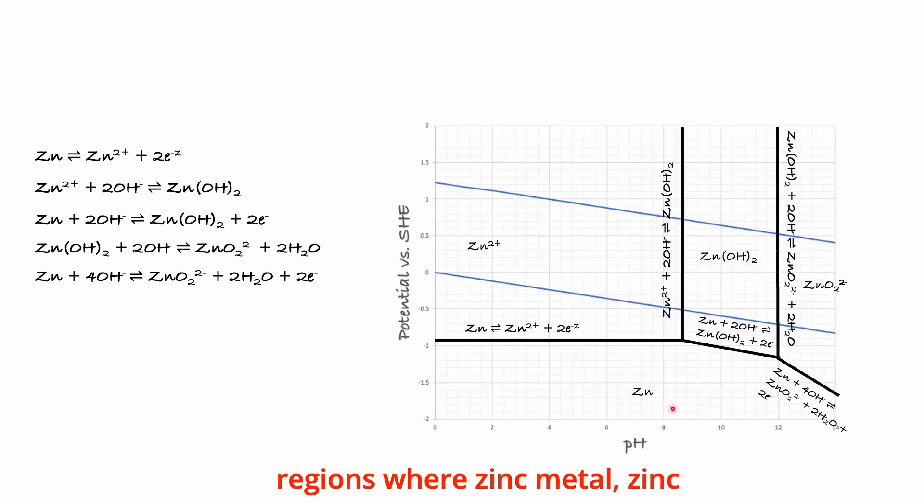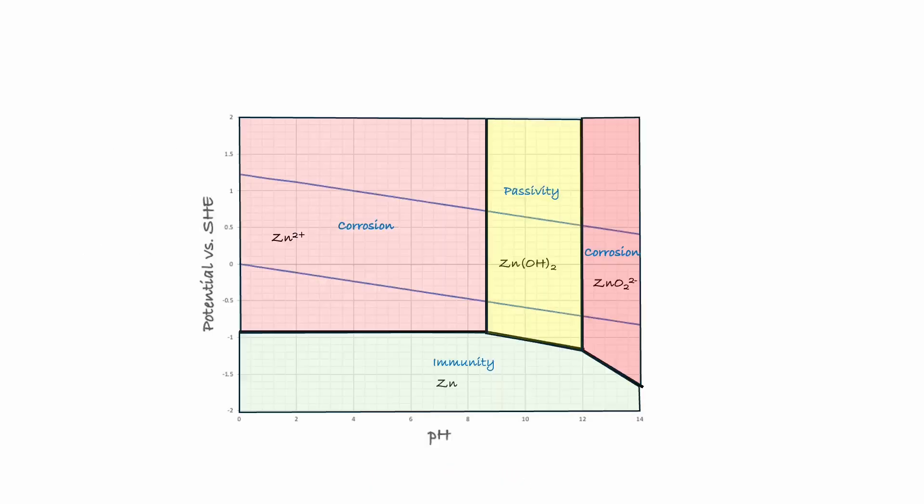In this diagram, we find regions where zinc metal, zinc 2-plus ion, zinc 8-ions, and zinc hydroxide are stable. Hence, under conditions of pH and potential below these lines, reduction of zinc ions in the solution to form metallic zinc is the thermodynamically favored reaction. In such region, corrosion is thermodynamically impossible, and we call this region the immunity region.